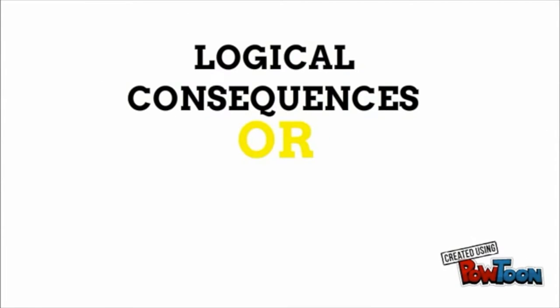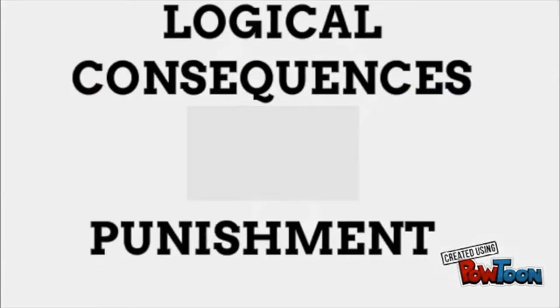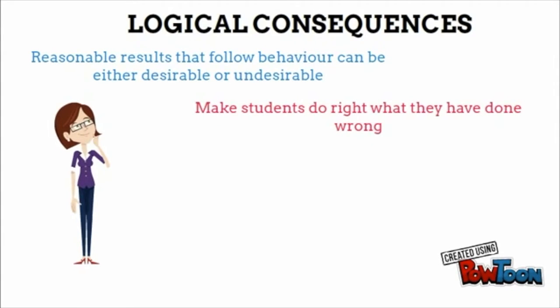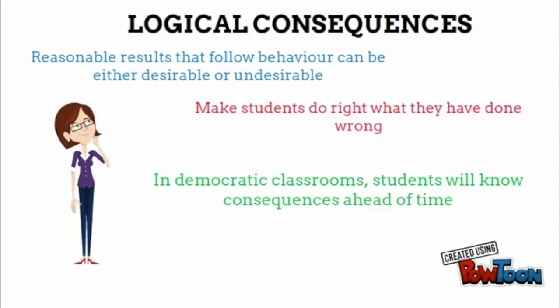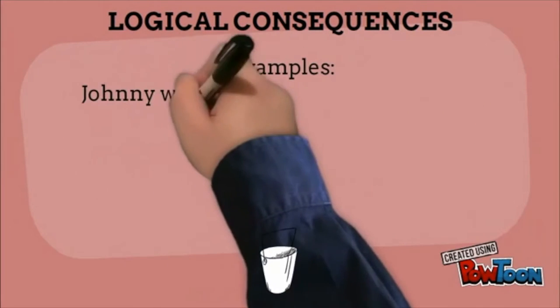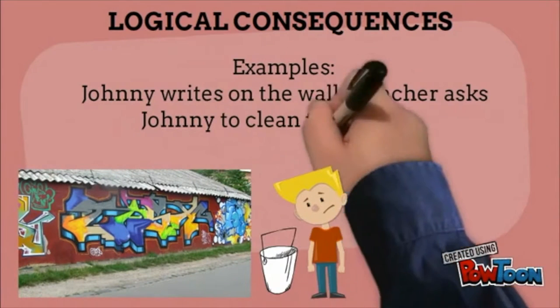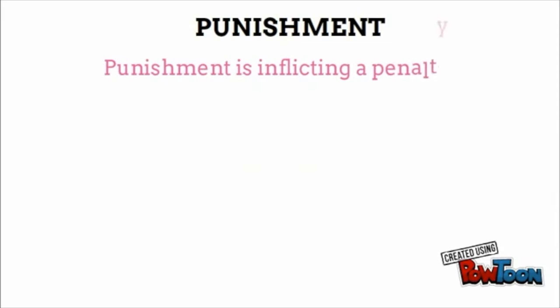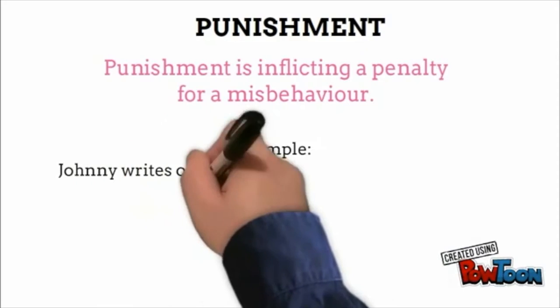Logical consequences versus punishment. A logical consequence is a reasonable result that follows a behavior, which can be desirable or undesirable. It encourages students to do right what they have done wrong. Dreikers recommends having a democratic classroom so students know the consequences ahead of time. For example, Johnny writes on the walls, so the teacher asks Johnny to clean off the walls. For punishment — inflicting a penalty for misbehavior — Johnny writes on the walls so you keep him in for recess.